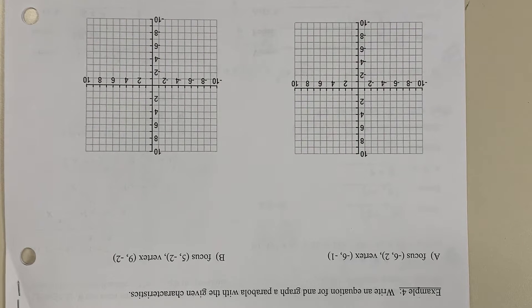Example 4. We're going to write an equation for and graph a parabola with the given characteristics. In letter A, we have a focus of negative 6, 2 and a vertex of negative 6, negative 1.